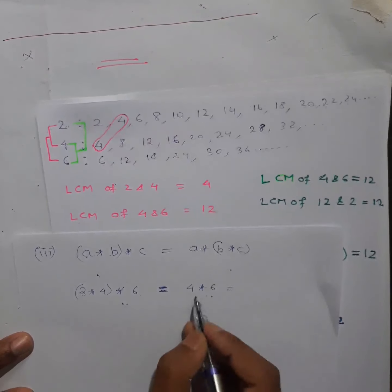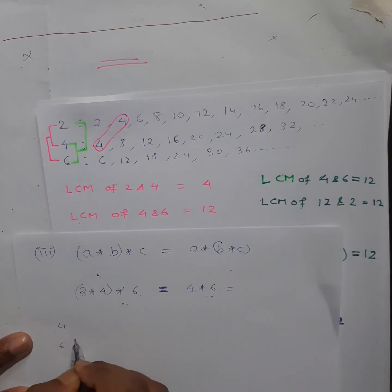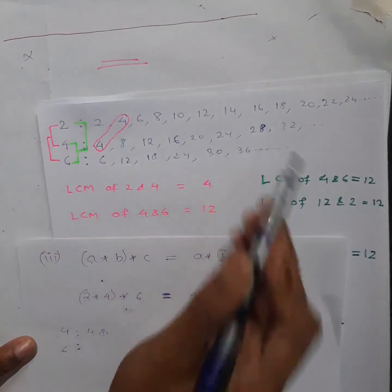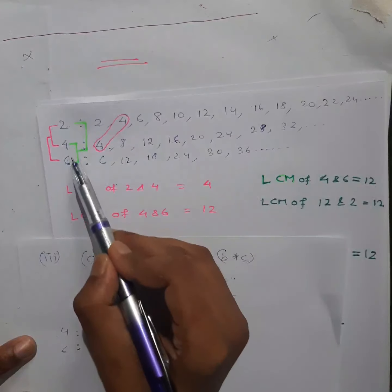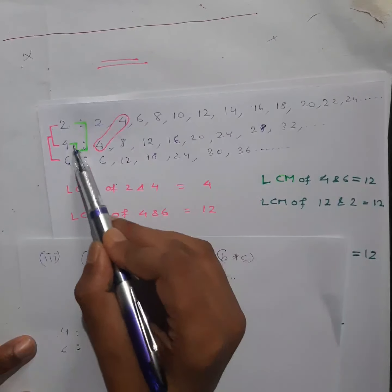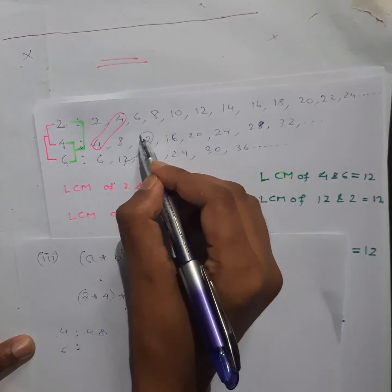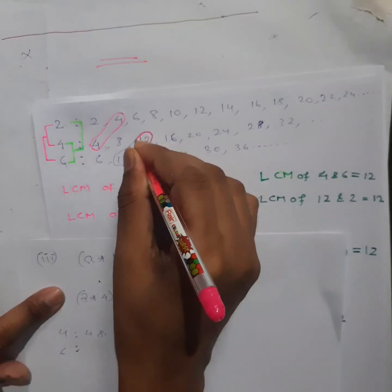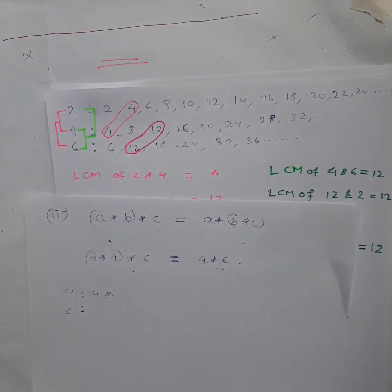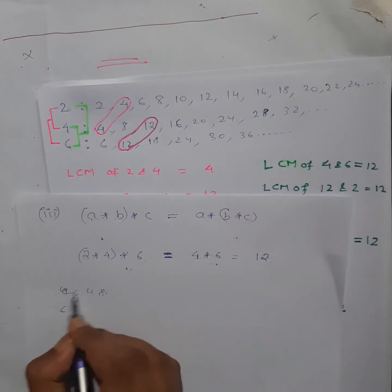For 4★6, I find LCM of 4 and 6. Multiple of 4 is the same as before. Multiple of 6 we already have. Looking at both lists, the lowest common multiple between 4 and 6 is 12. So (2★4)★6 = 4★6 = 12.